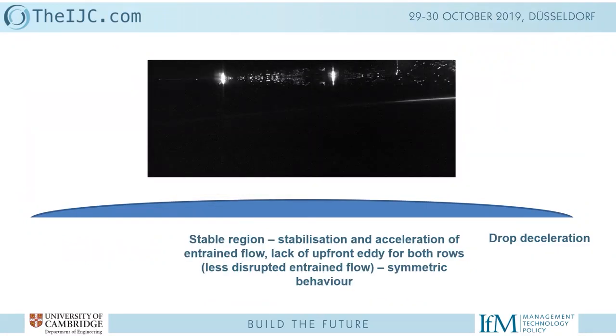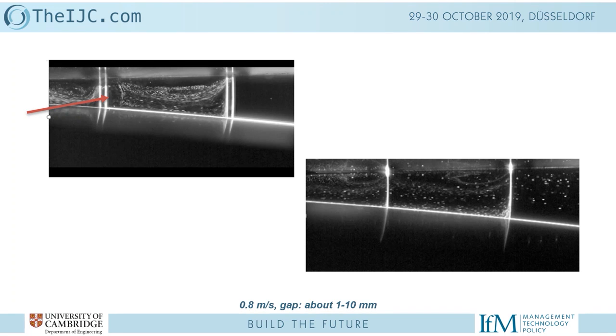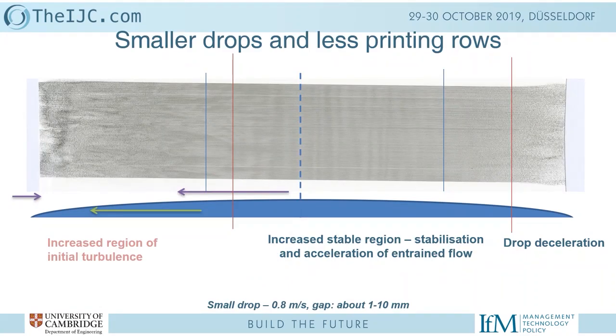With reduced drop size, we have drop deceleration at the end — they fly further because they're smaller droplets. Looking at the video: the substrate comes in, there's some mess at the beginning, but suddenly the flow is accelerated, generating a nice quiet flow. No eddy on the first row, no eddy on the second row. Everything is quite symmetric. There are still satellites and even main drops touching the substrate at larger gaps, but the difference between the two conditions is clear — it's that turbulence generated in the region between the lines that seems to make a difference in the printed pattern.